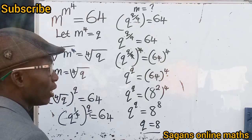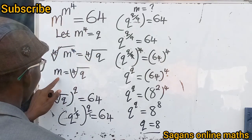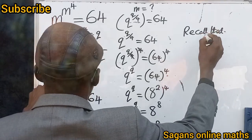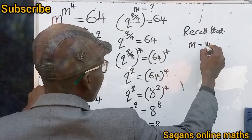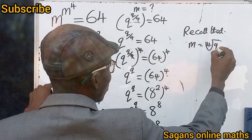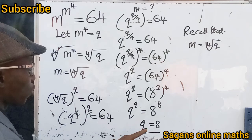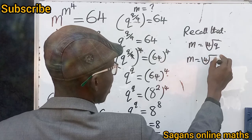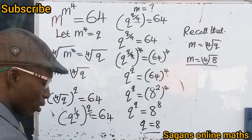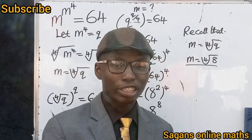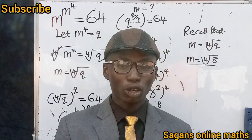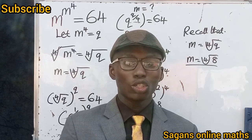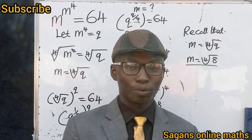Let's recall that m equals the 4th root of q. Since q equals 8, we substitute to get m equals the 4th root of 8. That is the solution to this problem. Please like, comment, and share with loved ones. If you are not subscribed, please consider subscribing. Thank you so much and God bless you.